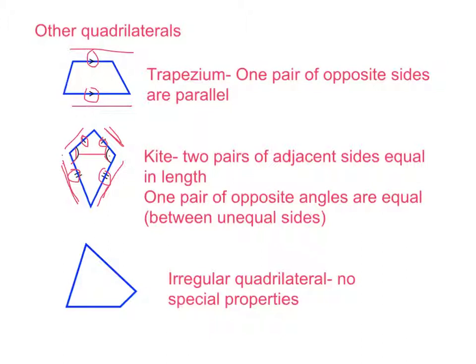This last one is a bit different — it's called an irregular quadrilateral. A quadrilateral is any shape with four straight sides, and this shape has four straight sides, so it qualifies. However, this isn't a regular quadrilateral: things don't run parallel, they don't run adjacent, nothing's equal. It's just a shape with four different sides and no special properties.